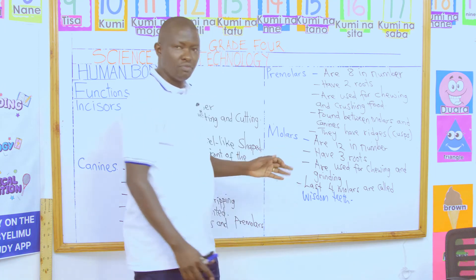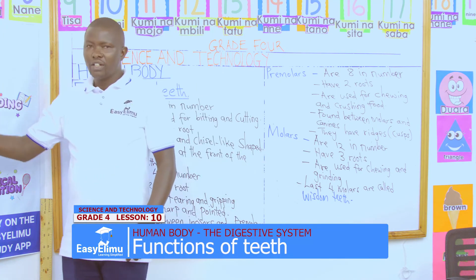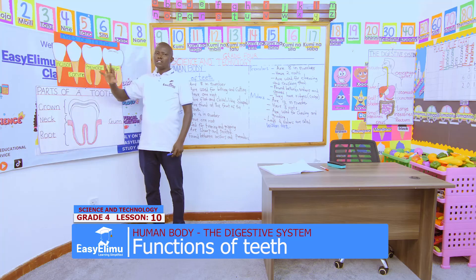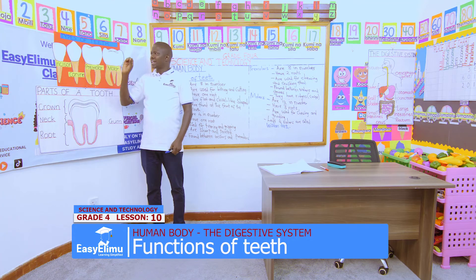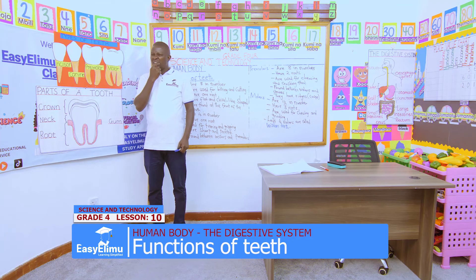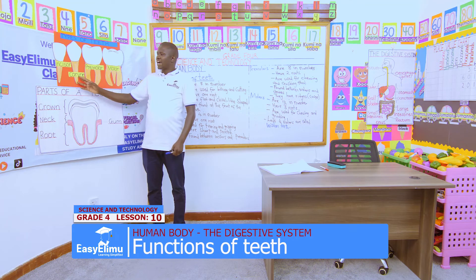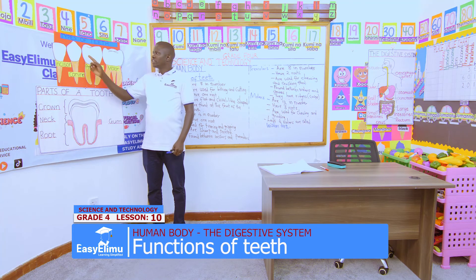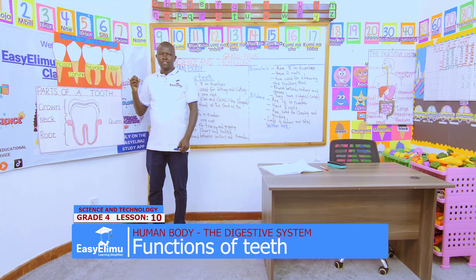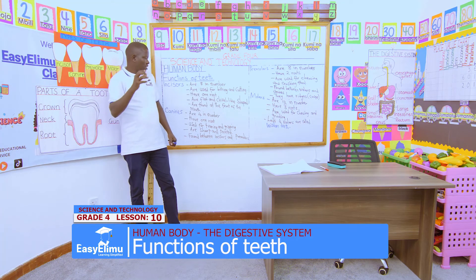Those are the four types of teeth and their functions. The incisors' function is cutting and biting because of their shape — they are the front teeth in our mouth. The canines — they are four, one at each corner — and they are sharpened for tearing. That is the work of the canines.